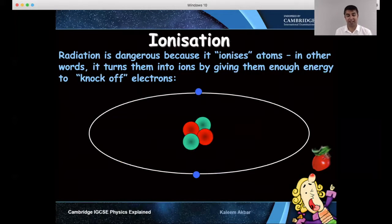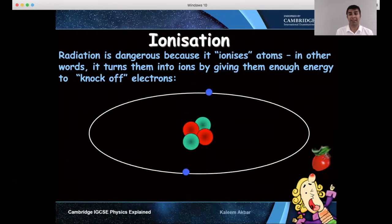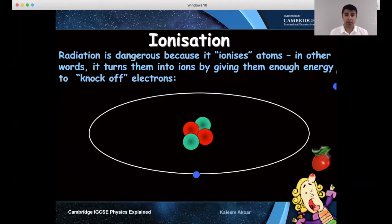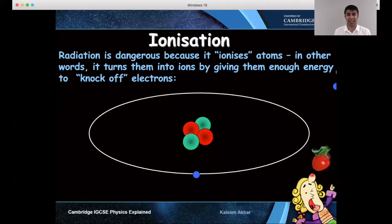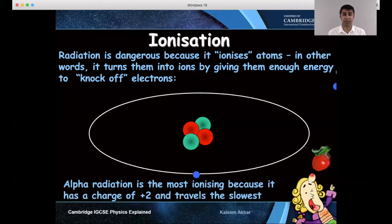Ionization — what is ionization? Radiation is dangerous because it ionizes atoms. Ionization in general in chemistry would mean loss or gain of electrons, but here we're only losing and not gaining anything. So why is it dangerous? Because you, I and everyone else is made up of billions and billions of atoms, and if something is coming in and knocking off our electrons, surely that cannot be a good thing. Alpha radiation is the most ionizing because it has a charge of positive two and it's also the slowest.